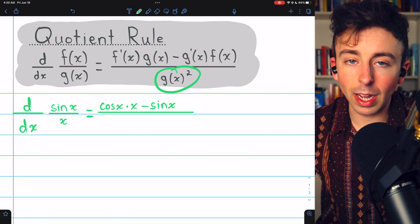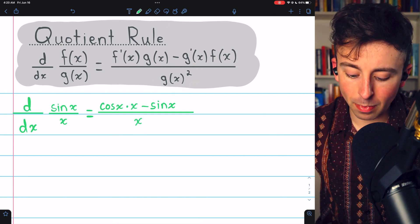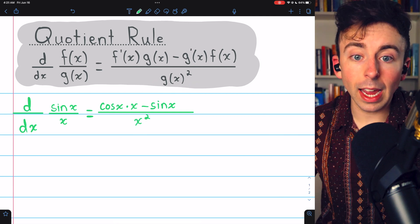Finally, we have to divide by g of x squared. That's just the denominator, x squared. And that's the derivative.